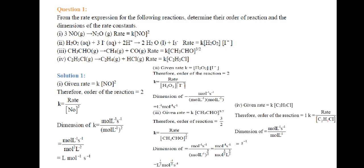Third reaction (c): CH3CHO(g) → CH4(g) + CO(g), rate = K[CH3CHO]^(3/2). The concentration is raised to the power of 3/2. So the order of reaction is 3/2. For order 3/2, K = rate / [CH3CHO]^(3/2), and applying the general expression gives units of L^(1/2)·mol^(-1/2)·s⁻¹.